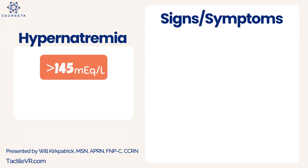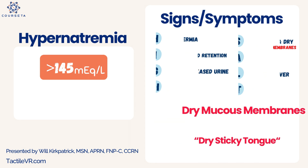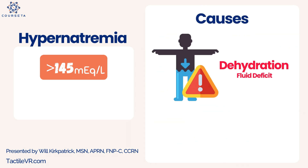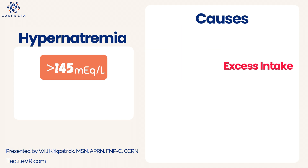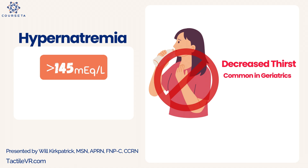Hypernatremia is anything above 145. For signs and symptoms, remember HIGH SALT: Hyperthermia, Increased fluid retention, Greatly increased urine output, Hypertension, Skin flushed and dry, Agitation, Low-grade fever, and Thirst. A key term commonly used is dry mucous membranes. The causes of hypernatremia relate to a fluid deficit — high sodium concentration because there's not enough fluid in the vascular space — or excessive sodium intake. Common conditions include diabetes insipidus, diuretic use, and inadequate water intake, especially in geriatric patients who have a decreased sensation of thirst.